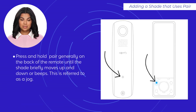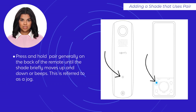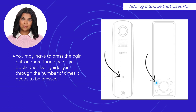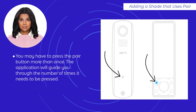Press and hold the Pair button — generally located on the back or in the battery compartment of the remote — until the shade briefly moves up and down or beeps. This is referred to as a jog. You may have to press the Pair button more than once; the application will guide you through the number of times it needs to be pressed.